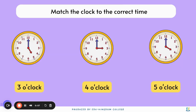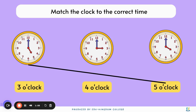Let's try matching these times together. The first clock on the left: the minute hand is pointing at 12, so it will be o'clock. Then the hour hand is pointing at 5, so it will match with 5 o'clock. The second clock: the minute hand is pointing to 12 as well, so it will be o'clock. Then the hour hand is pointing at 3, so it will be 3 o'clock.